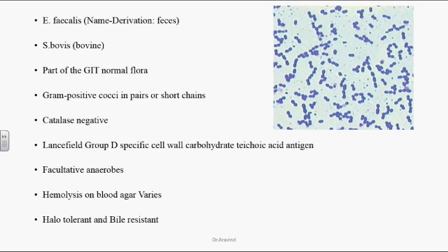These organisms have a Lancefield Group D specific carbohydrate molecule on their surface, associated most of the time with teichoic acid. They are facultative anaerobes. Hemolysis on blood agar varies — few organisms show alpha hemolysis and the majority show gamma hemolysis. They are halo-tolerant and bile-resistant.